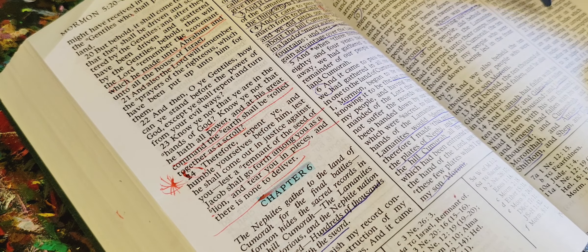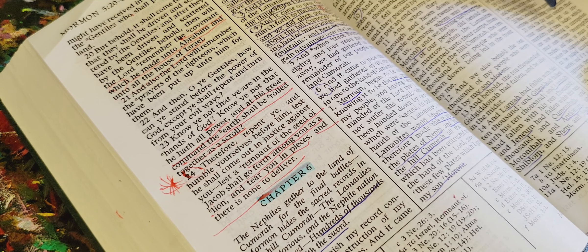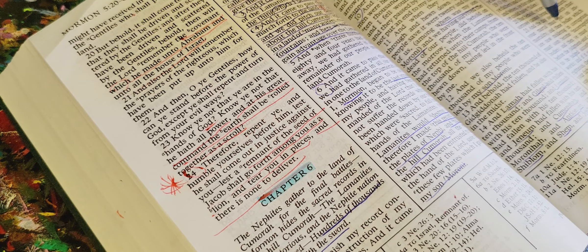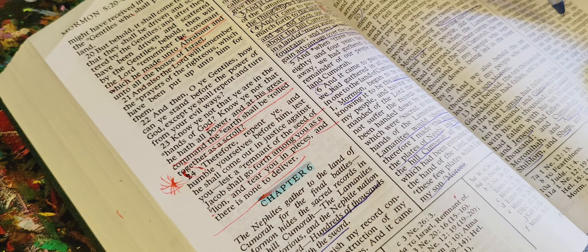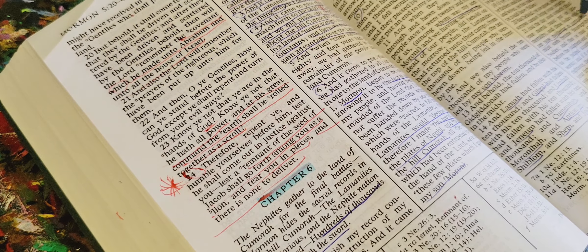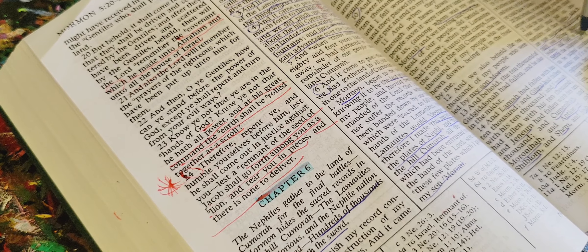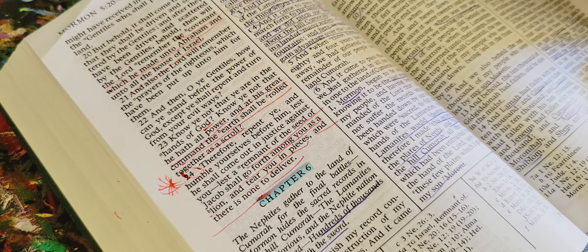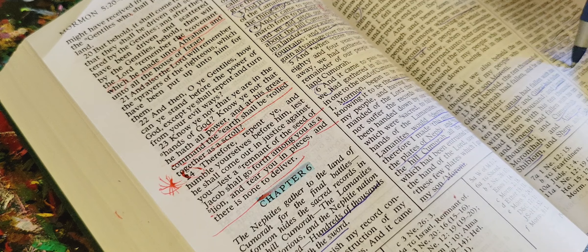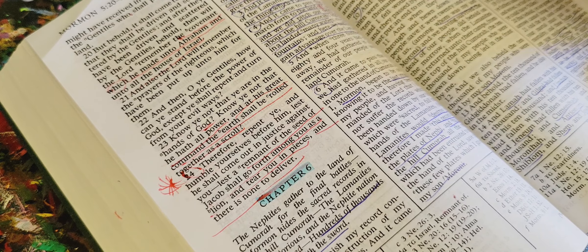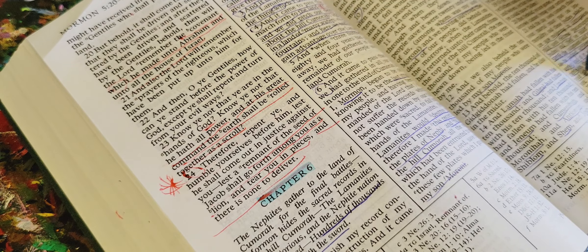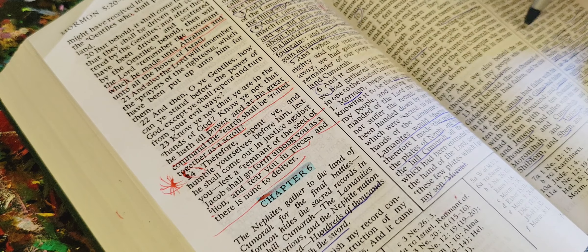And the day soon cometh that your mortal must put on immortality, and these bodies which are now mouldering in corruption must soon become incorruptible bodies. And then ye must stand before the judgment seat of Christ to be judged according to your works. And if it be so be that ye are righteous, then ye are blessed with your fathers who have gone before you. So look at that.